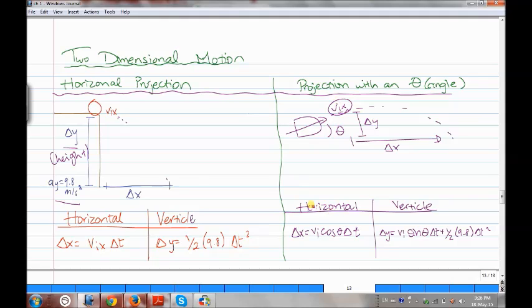So now here we have the formulas. Horizontal: we have delta X equals to VI cosine theta delta T, where theta is the angle. And for the vertical, we have delta Y equals to VI sine delta T plus half 9.8 delta T squared.